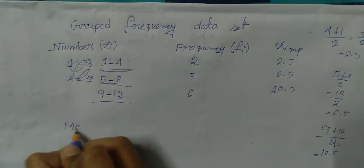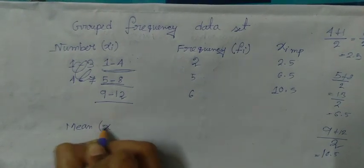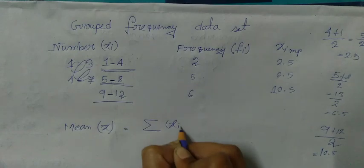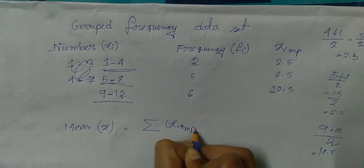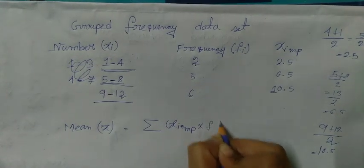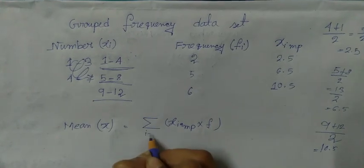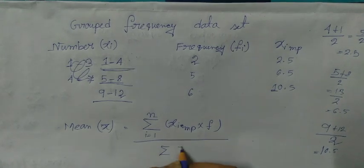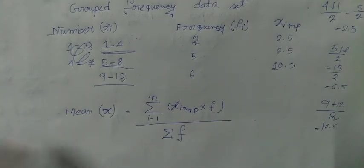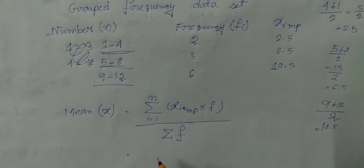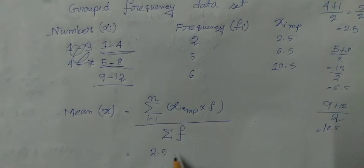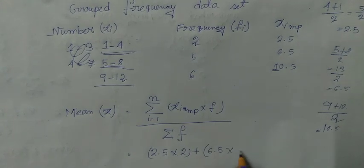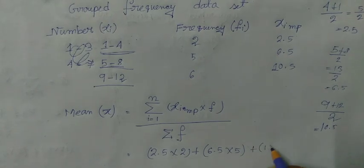So mean x bar is equal to summation of midpoint of x into frequency, here i is equal to 1 to n, divide by summation of f.